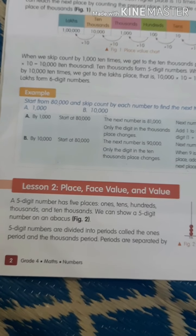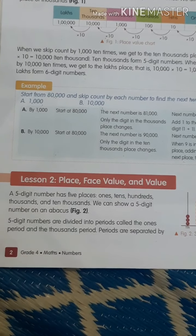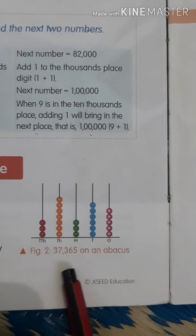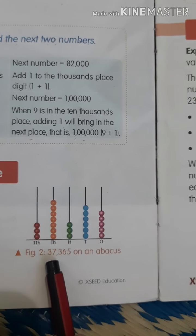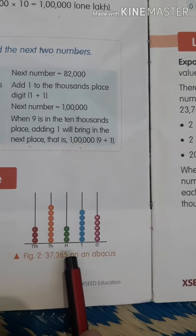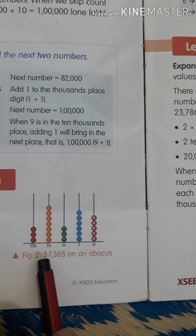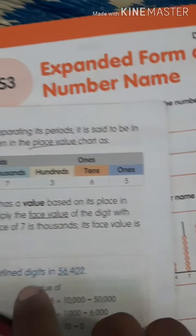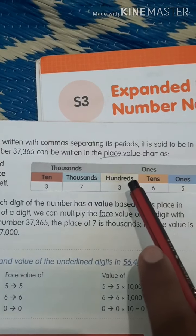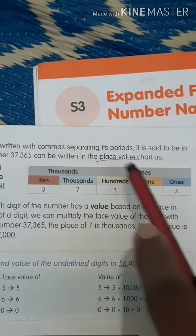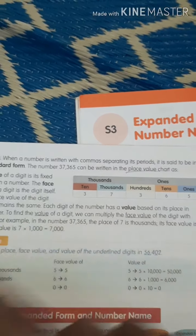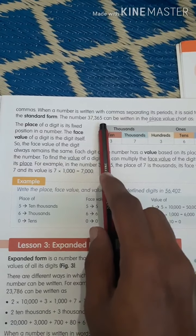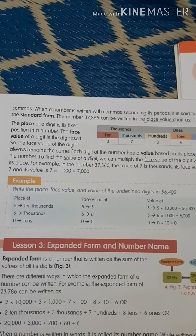5-digit numbers are divided into periods. There are 2 periods: one is the ones period and another is the thousands period. Periods are separated by a comma. So in 37,365 — the digits 5, 6, 3 form the ones period, and 7 and 3 form the thousands period. This 10,000 and 1,000 are in the thousands period.